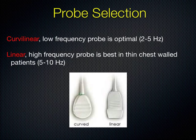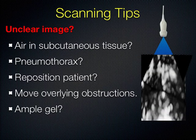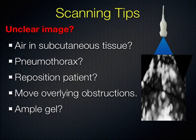A couple quick tips for any kind of imaging: if you don't have a great picture, troubleshoot. Do you have enough gel? Air is your enemy, gel is your friend. If you don't have good contact with the chest wall, or if you have something obstructing — a bandage, a bra strap — clear those things. You may need to reposition the patient. Also consider that the reason you can't see anything might be because there's air in the tissues or a pneumothorax, which obliterates your image — and that tells you something too.